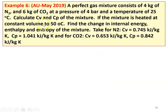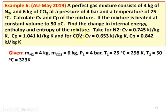Example number 6, from the May 2019 question paper. A perfect gas mixture consists of 4 kg of N2 and 6 kg of CO2 at a pressure of 4 bar and temperature of 25°C. Calculate CV and CP of the mixture. If the mixture is heated at constant volume to 50°C, find the change in internal energy, enthalpy, and entropy. Given: N2: CV = 0.745, CP = 1.041; CO2: CV = 0.653, CP = 0.842 kJ/kg·K. Data: T1 = 25°C = 298 K, T2 = 50°C = 323 K.